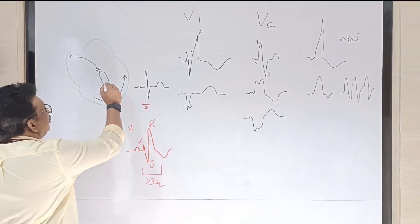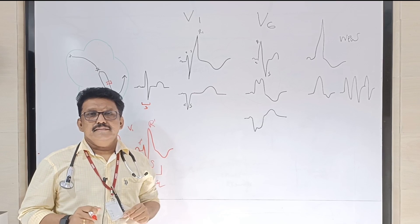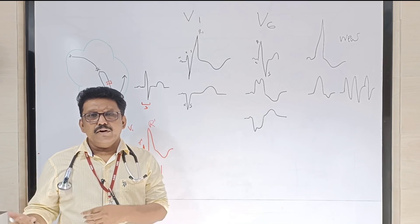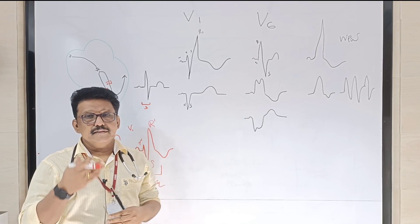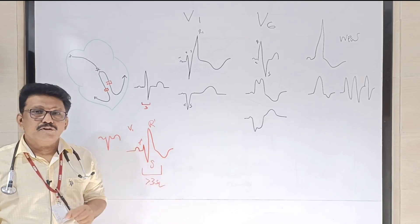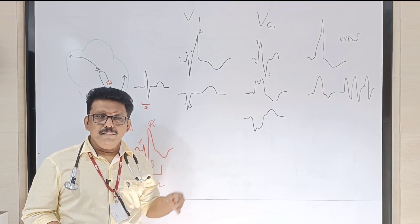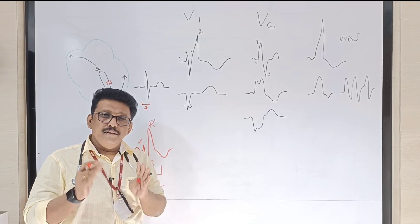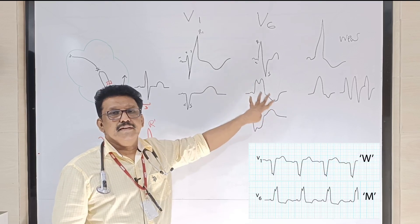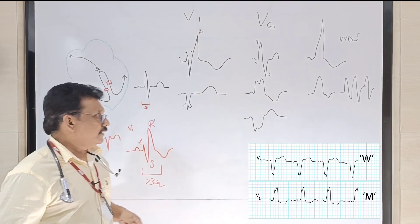Now we'll see what is LBBB — left bundle branch block. LBBB is classically observed in ischemic heart disease. If somebody comes with severe chest pain and you see left bundle branch block, that may be due to acute MI. Patients with chronic ischemic heart disease, degenerative heart disease, hypertensive heart disease, cardiomyopathies, or left ventricular enlargement can all have LBBB. An acute new LBBB in a patient with chest pain should be taken as acute myocardial infarction. LBBB is never a physiological phenomenon — it is always pathological.